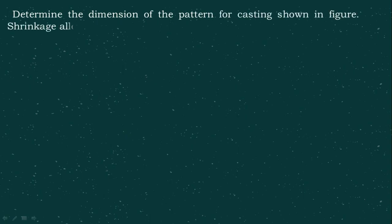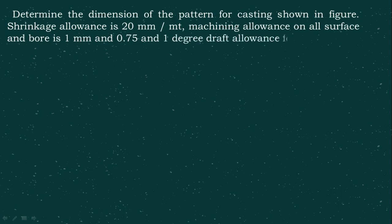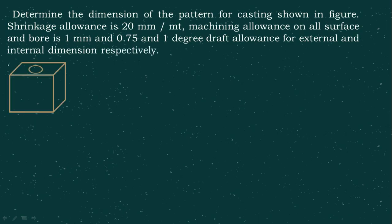To determine the dimension of the pattern for the casting shown in the figure: shrinkage allowance is 20 mm per meter, machining allowance on all surfaces and bore is 1 mm, and draft allowance is 0.75 and 1 degree for external and internal dimensions respectively.